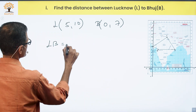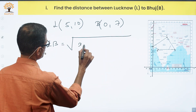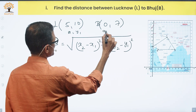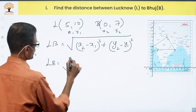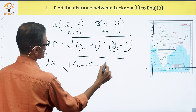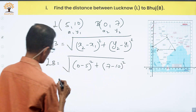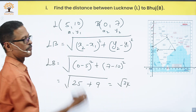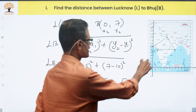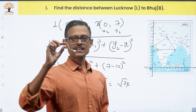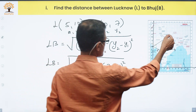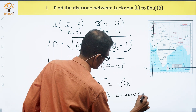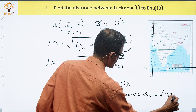LB equals the square root of (x2 − x1)² + (y2 − y1)², which is √((0−5)² + (7−10)²) = √(25 + 9) = √34. So the distance between Lucknow and Bhuj is √34 × 150 kilometers.